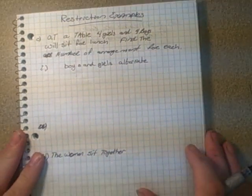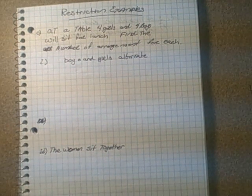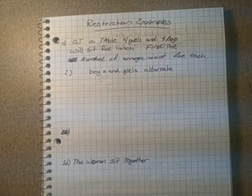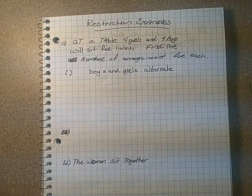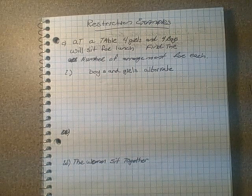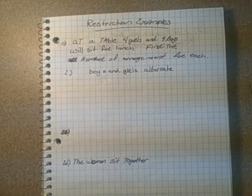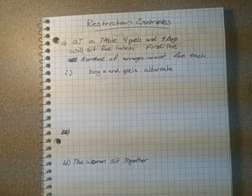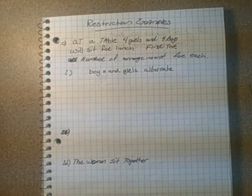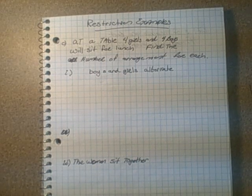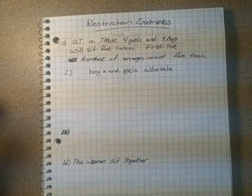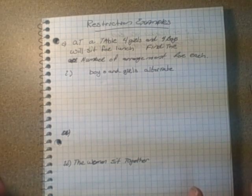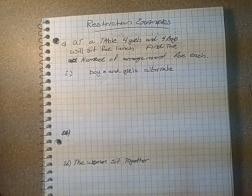Let's go over some of the more challenging restriction type examples which limit your cases. We're going to have to do some drawings for these circuit permutations with restrictions to help you understand what's going on. They give you some really good examples on pages 201-203. I'm going to do some similar examples. At a table of four boys, four girls sitting for lunch, find the given number of arrangements.